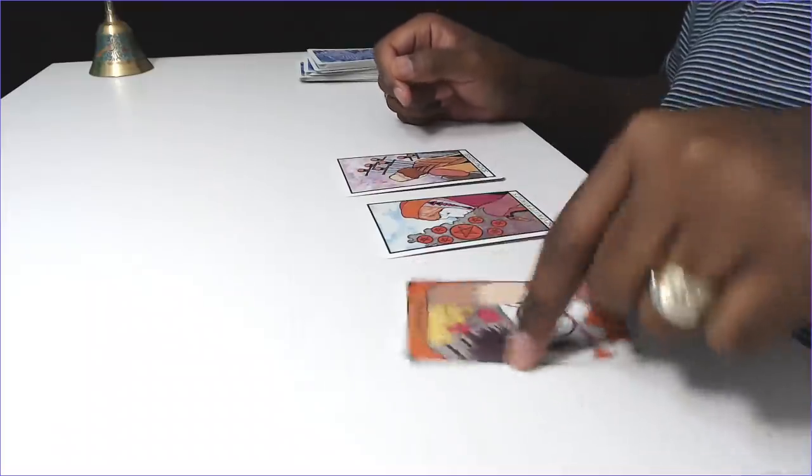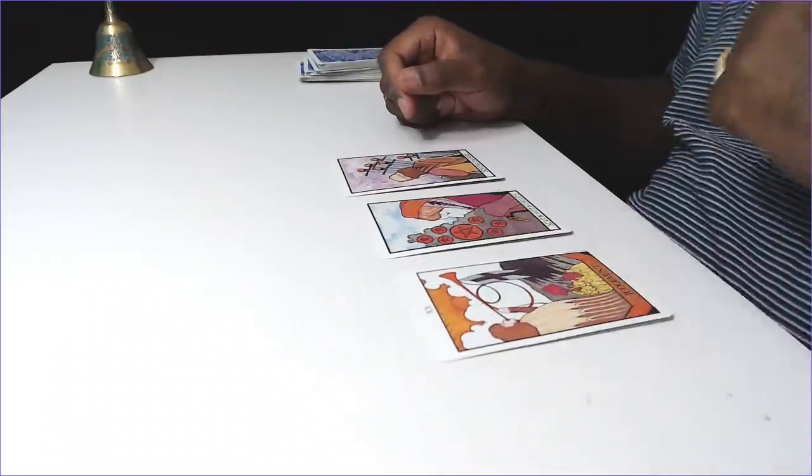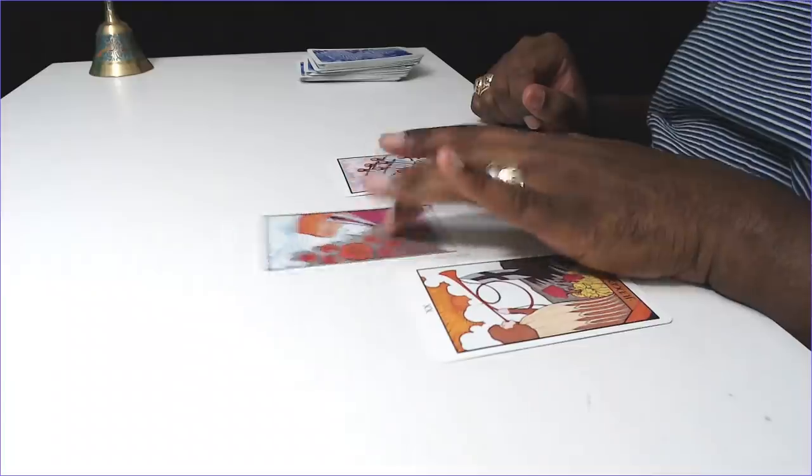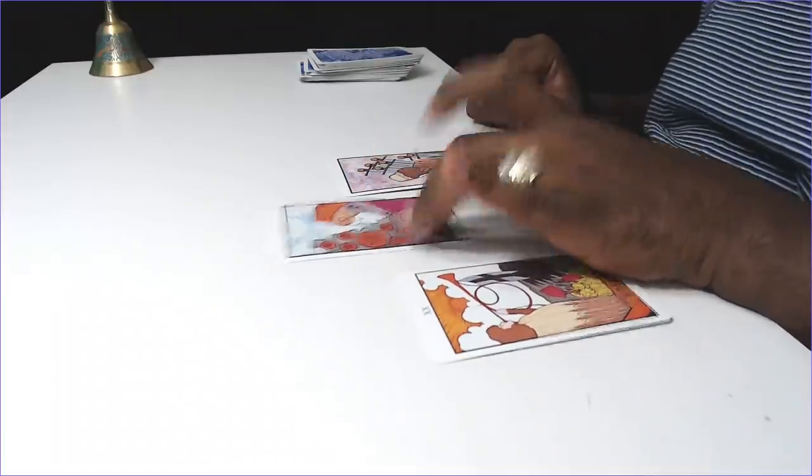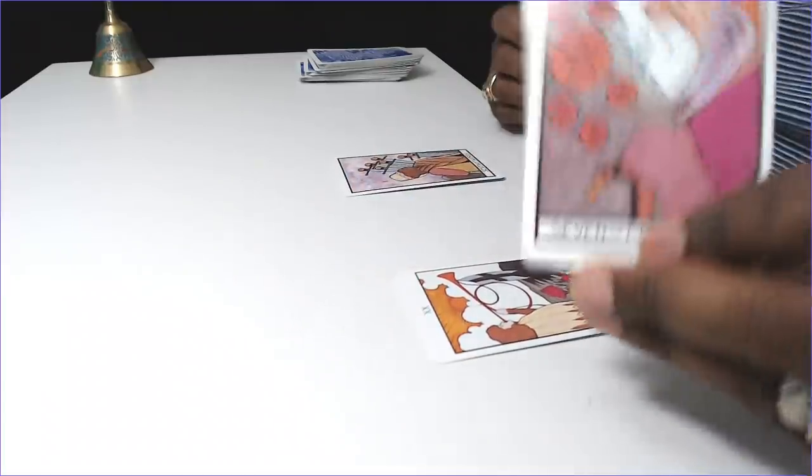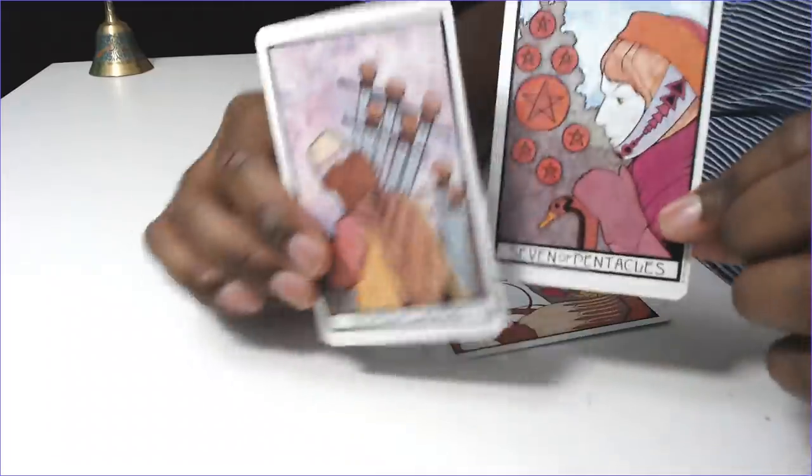Seven of Pentacles, Seven of Swords, and the Judgment Reversed. So, bad judgment. Seven of Pentacles. There is your planted, your seeded, your money. And then strategy.